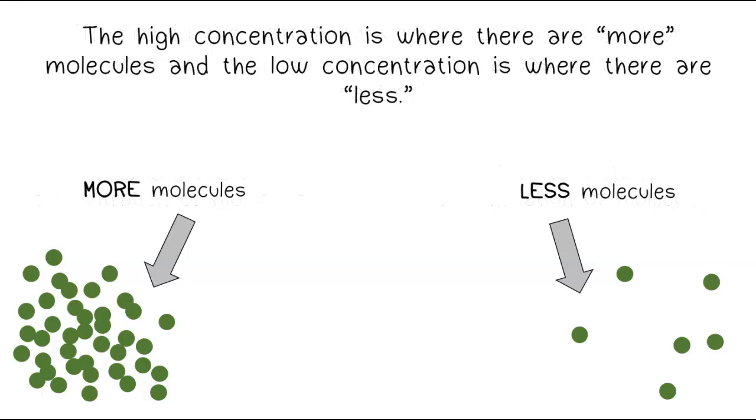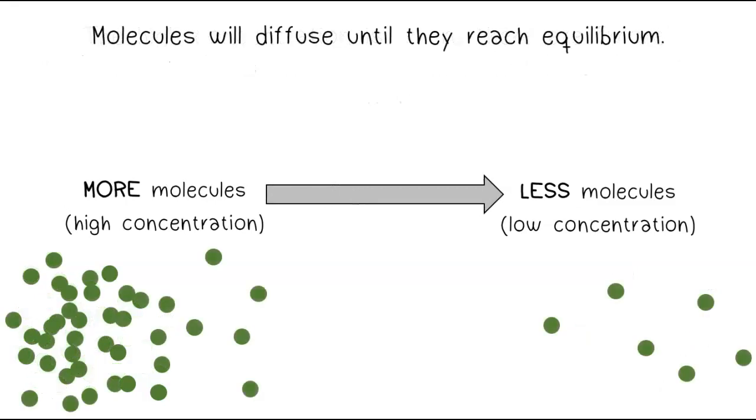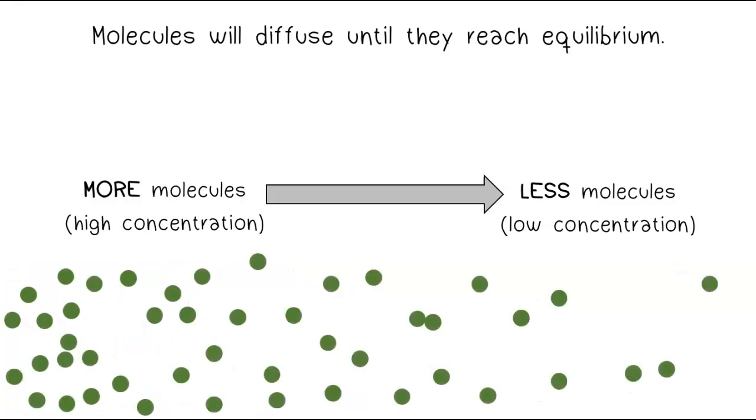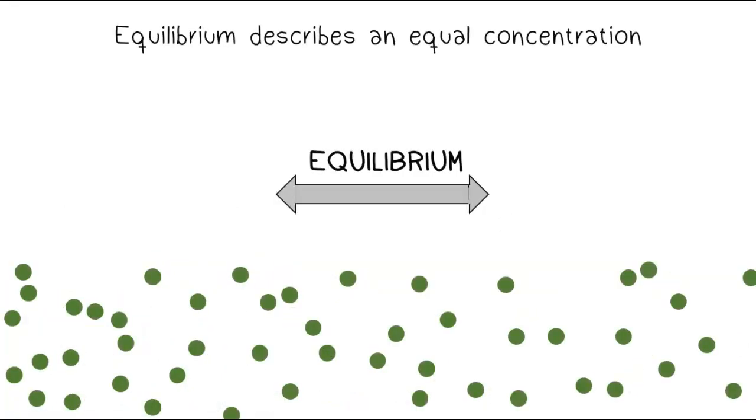The high concentration is where there are more molecules, and the low concentration is where there are less. Molecules will diffuse until they reach equilibrium. Equilibrium describes an equal concentration.